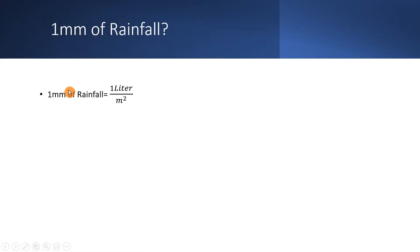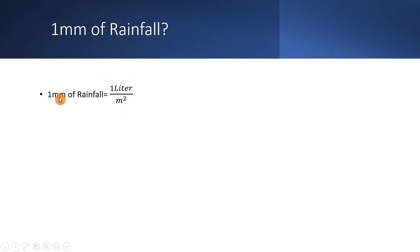The answer is that one millimeter of rainfall actually means one liter per square meter of rainfall. These two are equal, and if you work out the units you can verify this. Let's do that conversion. One liter is equal to one divided by one thousand cubic meters.